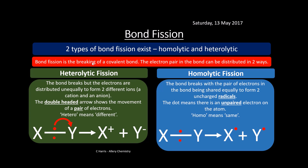Homolytic fission is where the bond breaks with the pair of electrons shared equally, forming two uncharged radicals. The dot notation means there's an unpaired electron on the atom. Homo means the same — both products are radicals. One electron goes to X and the other to Y, giving us X· and Y·, two radicals.